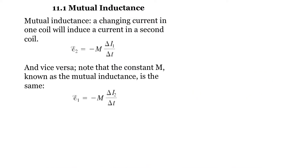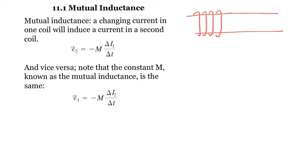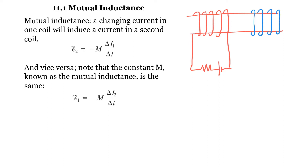Mutual inductance is about two coils. The first coil produces a current when connected to a voltage source. The second coil is connected to an ammeter. When you connect to the potential difference, the current starts at zero amperes and then increases to one, two, three amperes and so on. This second coil will feel the effect of the induced EMF.